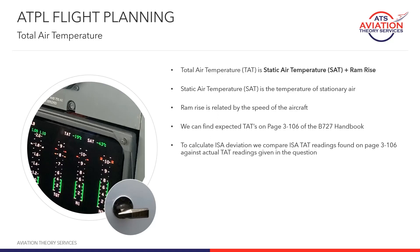Total air temperature comes up in this exam quite often as in-flight data. In the exam they could either give you forecast temperature, outside air temperature, or total air temperature, which is read from the temperature gauge in the aircraft. Total air temperature is static air temperature plus the temperature rise associated with high-speed flight. Something important to remember is that static air temperature is the same as outside air temperature, so don't be surprised if you see static air temperature written instead of outside air temperature.